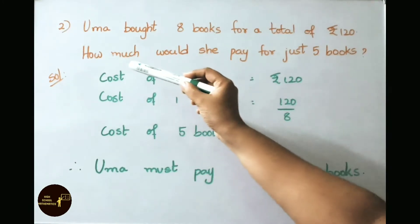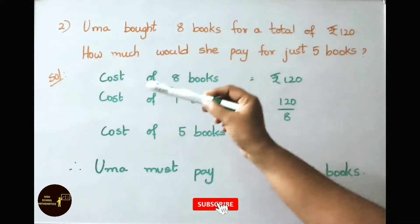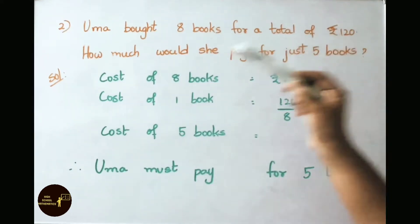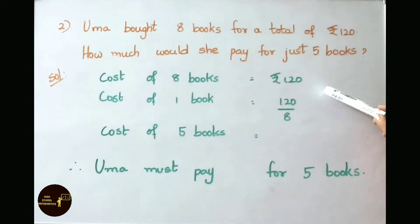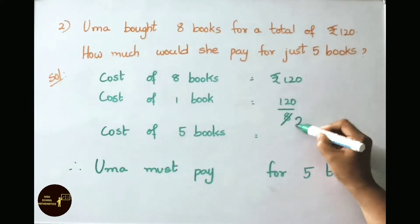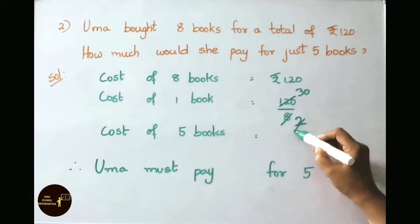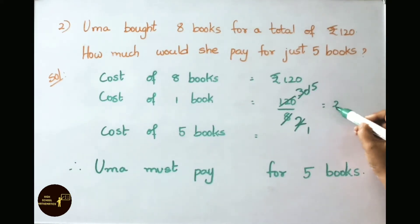Question number 2: Uma bought 8 books for a total of 120 rupees. How much would she pay for just 5 books? Let us see the solution. Cost of 8 books is 120 rupees. Cost of 1 book is 120 by 8. 4 thirties are 120, so cost of 1 book is 15 rupees.